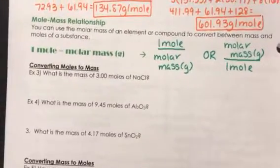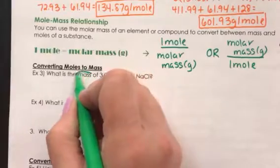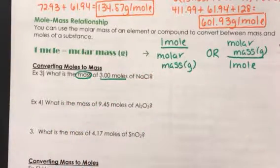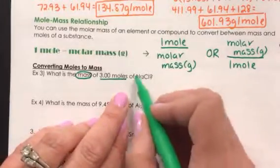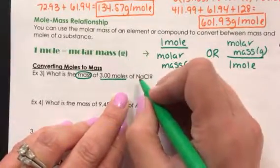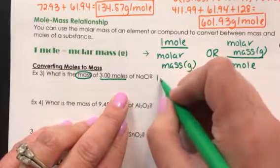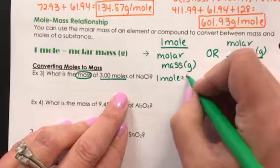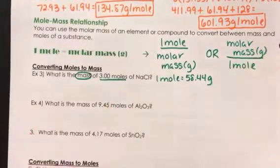So let's look at example number three. What is the mass of three moles of sodium chloride? I need to first add up the molar mass of sodium chloride. I take one sodium and one chlorine and add those together from the periodic table, and I find that the molar mass is 58.44 grams.